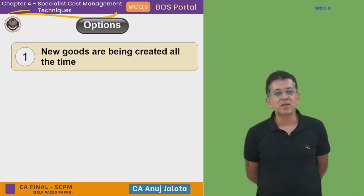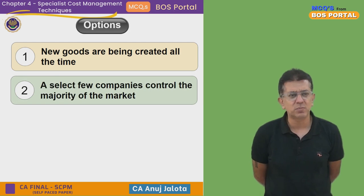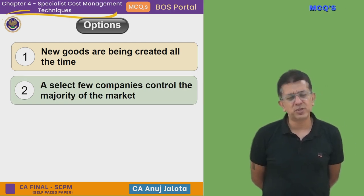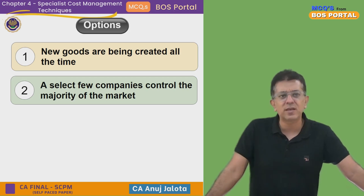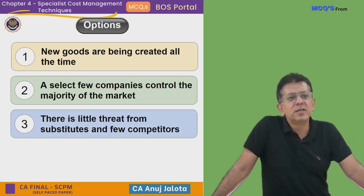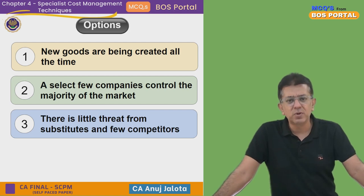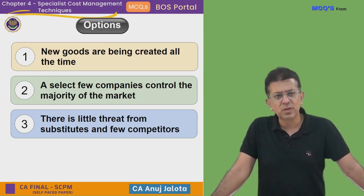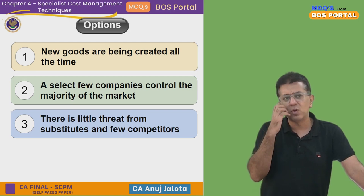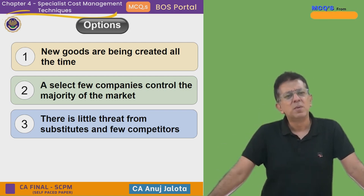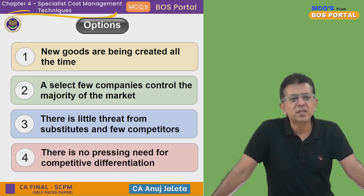Now let's look at the four options. Option A: new goods are being created all the time — but in a growing industry, companies actually create similar types of products. Option B: a select few companies control the majority of the market — I don't think so, as competition starts coming in because it's a growing industry. Option C: there is little threat from substitutes and few competitors — competitors will actually be high because the industry is growing.